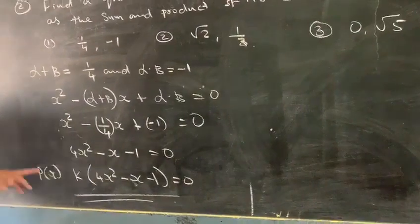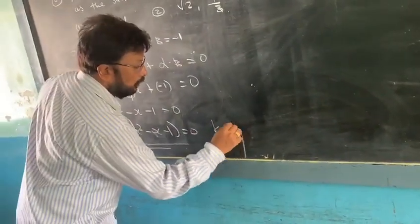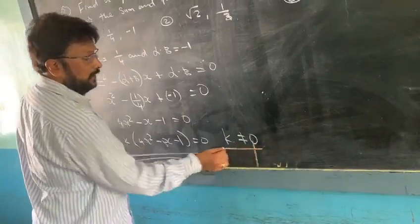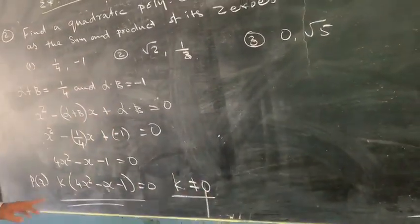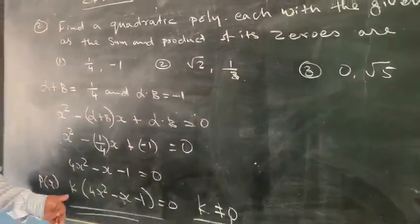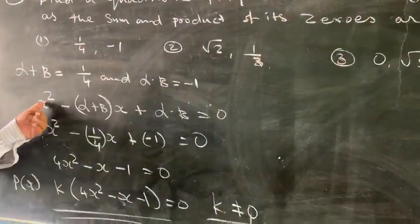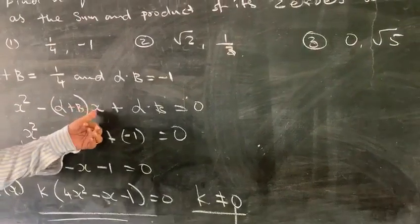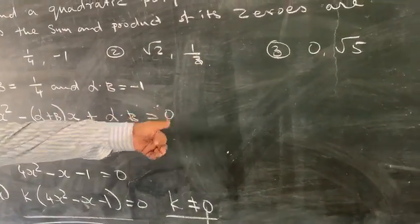Here k is any constant not equal to zero. The formula is very important: x squared minus (alpha plus beta)x plus (alpha times beta) equals 0.